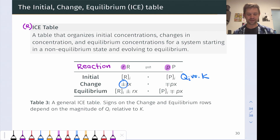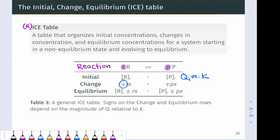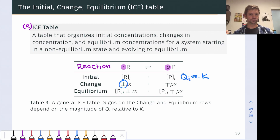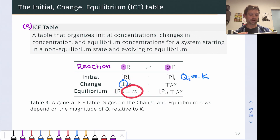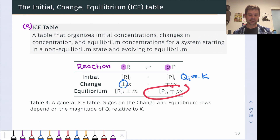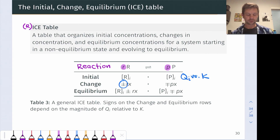One more thing about the change line: we multiply by the stoichiometric coefficient for that species. For x reaction events, we gain or lose r times x molecules of the reactant and gain or lose p times x molecules of the product. At equilibrium, we simply add the initial and change lines. We take the initial R concentration and add or subtract rx, and take the initial product concentration and add or subtract px to get the equilibrium concentration, and we can do this for any number of reactants or products.